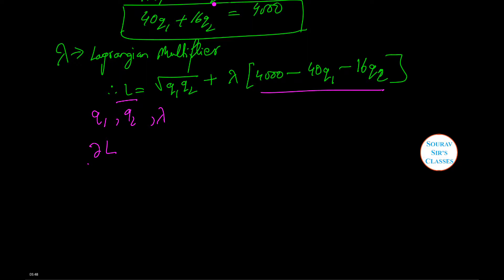Therefore dL by dQ1, that is we're partially differentiating this function, equals root Q2 by root Q1 minus 40 lambda equals 0. Let this be equation 1.